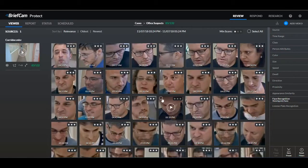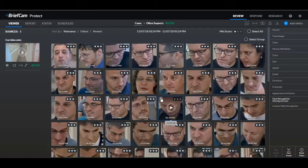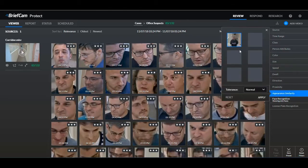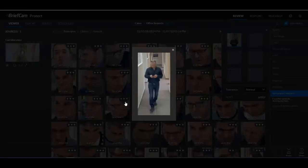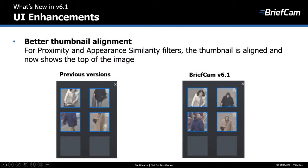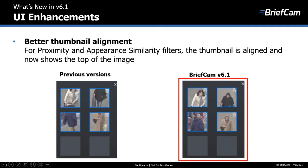Now let's see another feature. For proximity, appearance similarity, and face recognition, if I add an item to the filter, we now have a zoom button here, and you can click on it to see the entire thumbnail. For proximity and appearance similarity, the thumbnail of people is now aligned and shows the top of the image. This is what the filter used to look like, and you can see that in the new version, the images are not cut off at the top.